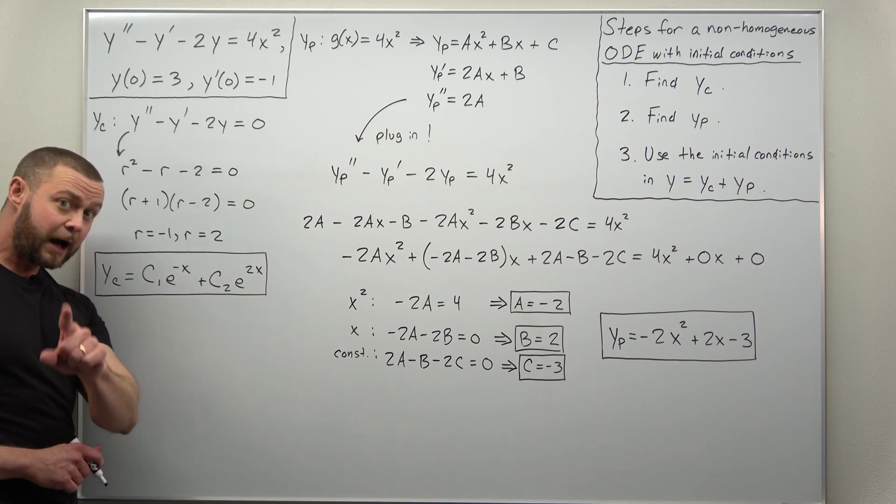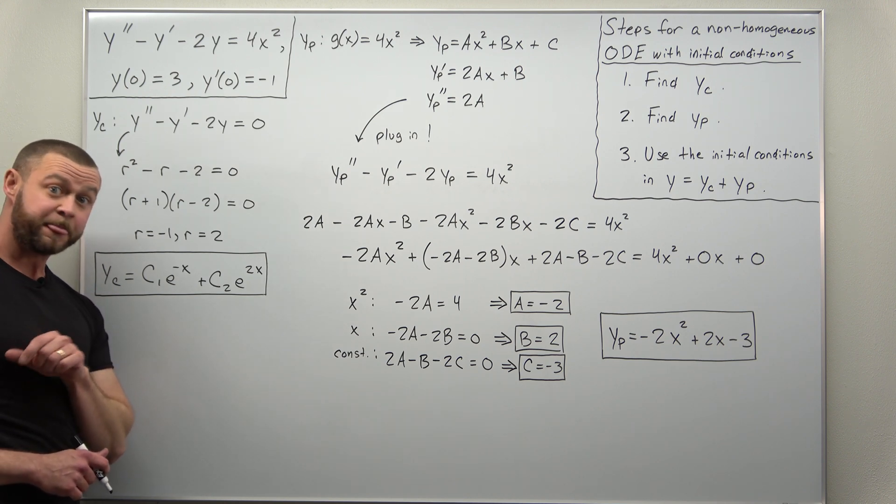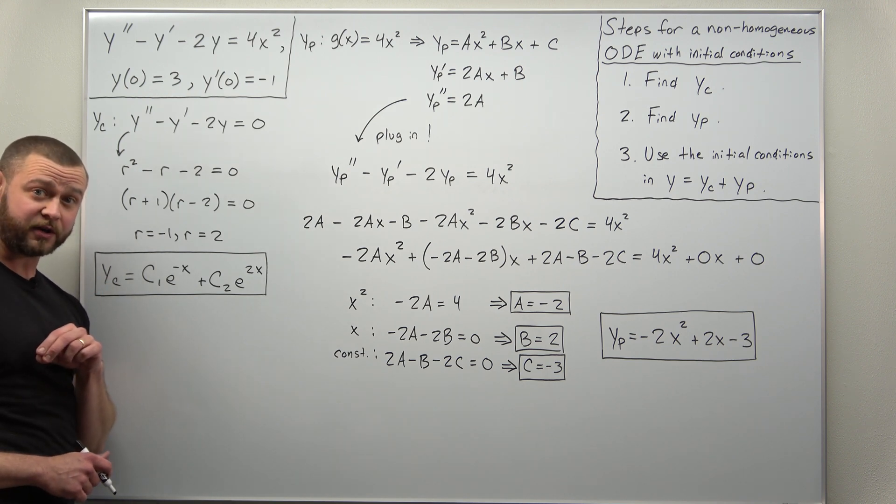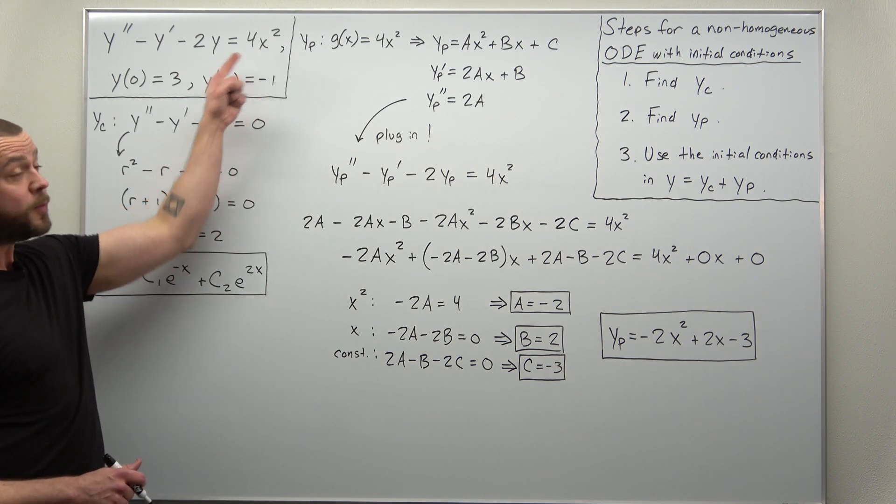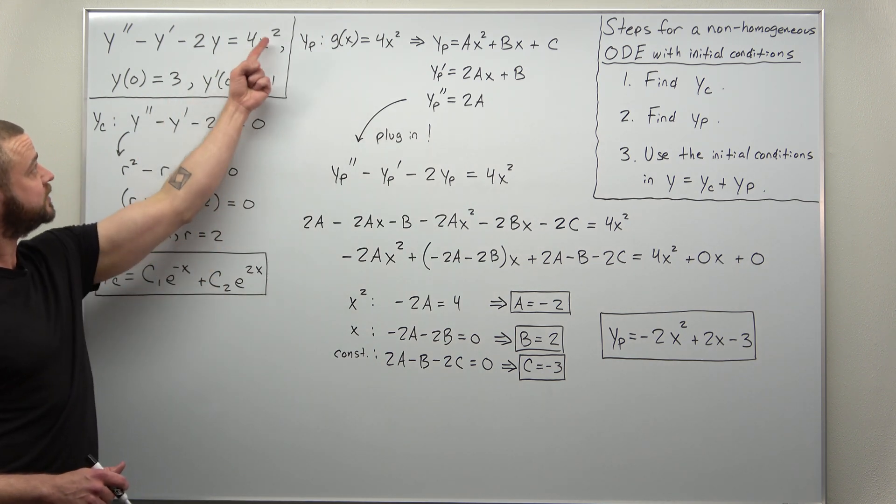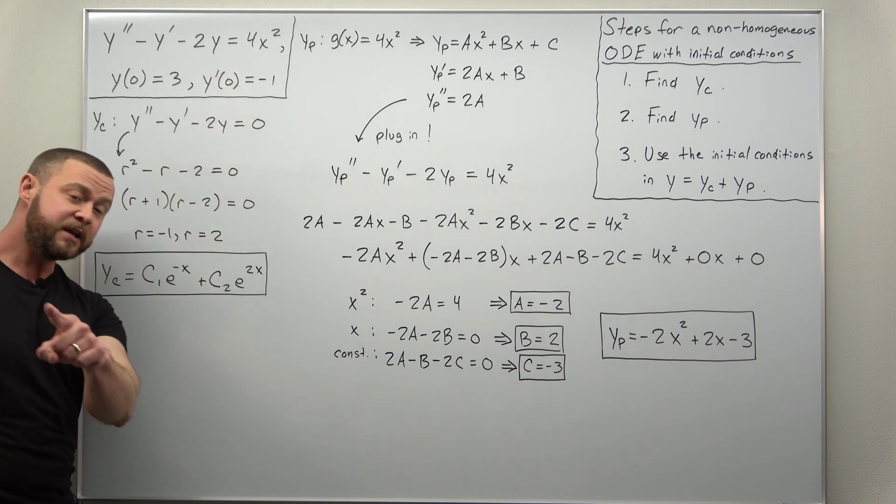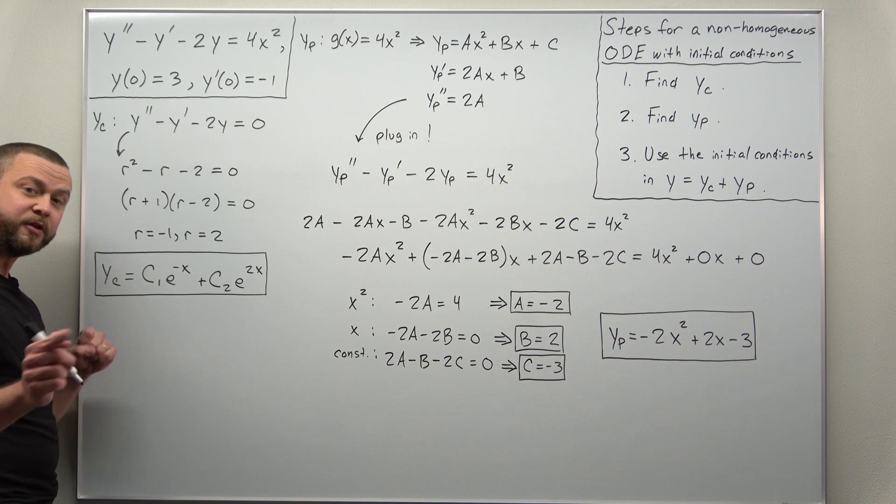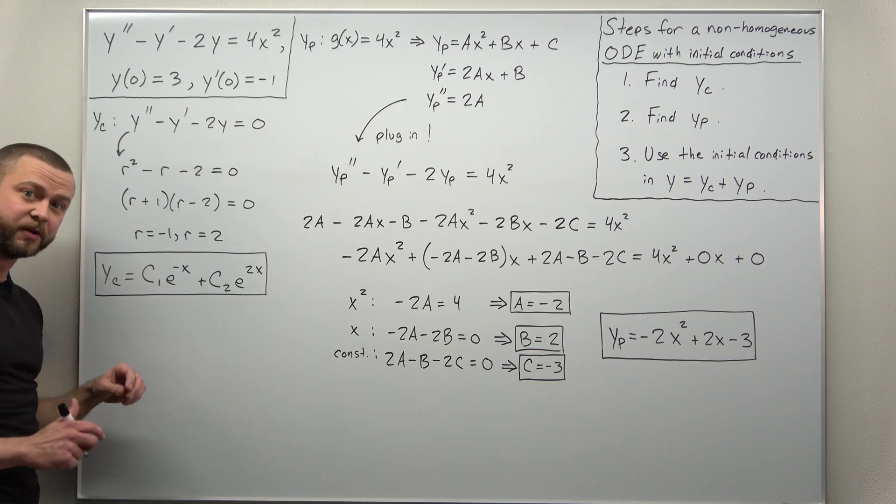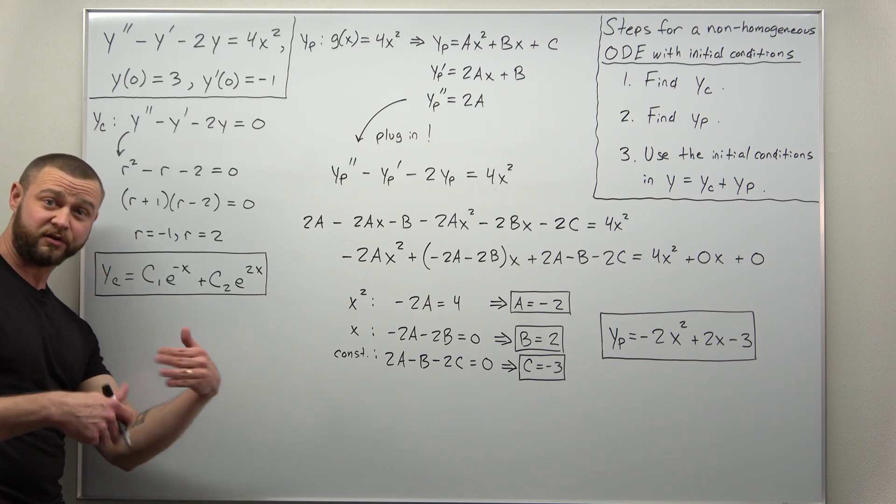Now the common mistake I find with my students and a lot of students in differential equations is earlier when you first encountered homogeneous ODEs where the right-hand side was zero, you did use your initial conditions right here. But you didn't call that the complementary solution, you just called that your solution.